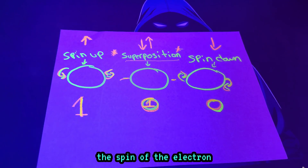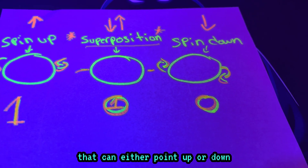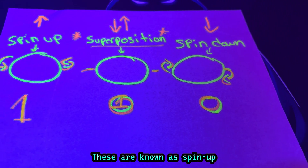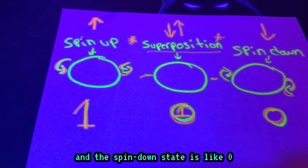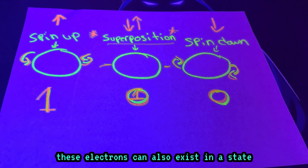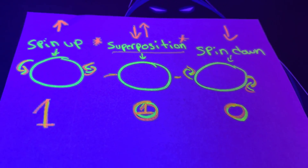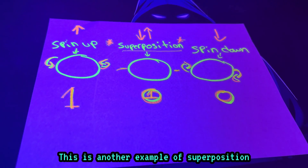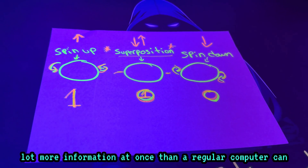In quantum computing, qubits don't just rely on ones and zeroes. They can also exist in different states based on the spin of the electron. Imagine each electron has a tiny magnet that can either point up or down — these are known as spin up and spin down states. The spin up state is like one, and the spin down state is like zero. Because of quantum mechanics, these electrons can also exist in a state where they're both spinning up and spinning down at the same time, just like a coin flipping in the air. This is another example of superposition, allowing quantum computers to represent a lot more information at once than a regular computer can.